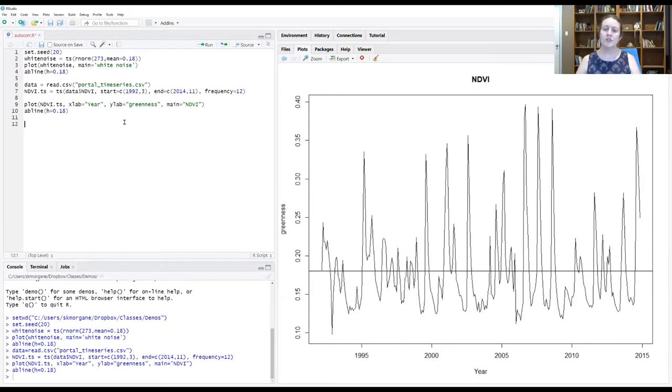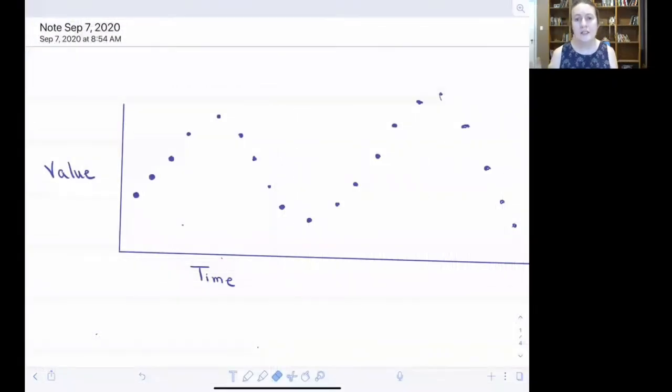One of the things that we can do is use something called a lag plot to figure out how many different time steps can you see this dependence between the observation at one time point and the observation of another time point. So this concept of autocorrelation and lags can be very confusing for people who haven't been exposed to these concepts before. So I wanted to go back to the whiteboard real quick before we did further exploration of this in R, just to make sure that we're all clear on what these concepts are.